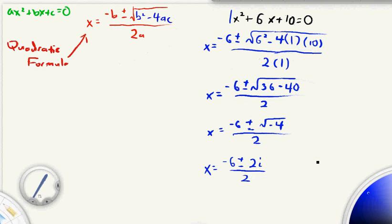And so now here is where we split this into our two different imaginary answers. So we're going to have negative 6 plus 2i over 2. So we just divide this. This would be negative 6 divided by 2 is going to give us negative 3 plus, and then 2i divided by 2 is just 1i, so just i. So we have negative 3 plus i. This is one of our answers, this is one of the solutions.